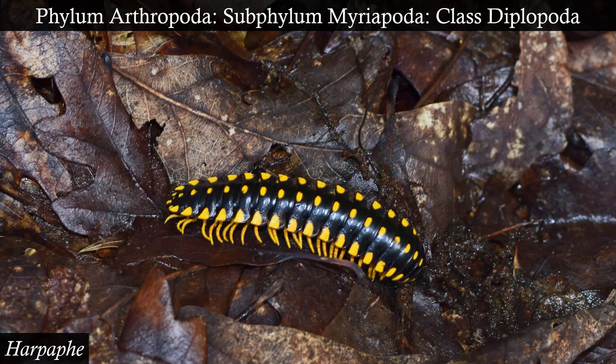Contrasting Diplopoda with Chilopoda: diplopods are millipedes. You can right away see that millipedes are a little different — they have many more legs, two per body segment as opposed to one. This one is Harpafi, the cyanide millipede. Centipedes are usually active predators, while millipedes are detritivores, scavengers, or herbivores. Both prefer dark, moist environments, but whereas a centipede is looking for prey to eat, the millipede is looking for leaves to munch on.